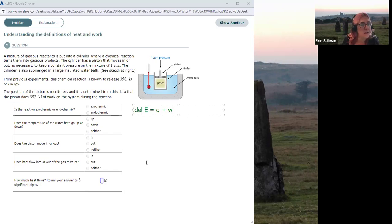If we look at this question, we know the chemical reaction releases 358 kilojoules of energy. So release from the system, that's telling me that the sign of delta E is negative. So delta E is going to be minus 358 kilojoules.